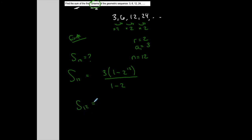s12 is equal to... So what I like to do with my order of operations, I do what's in the parentheses first. You could plug that into your calculator straight, 1 minus 2 to the 12, then multiply that by 3, and then divide that by negative 1. So for this case, I got 12,285.